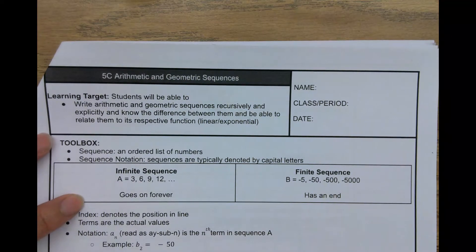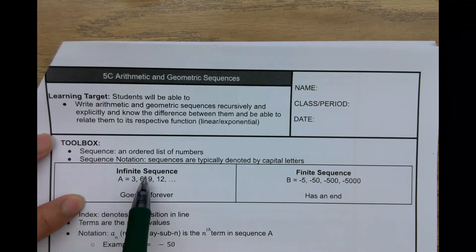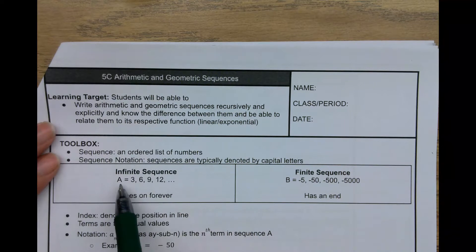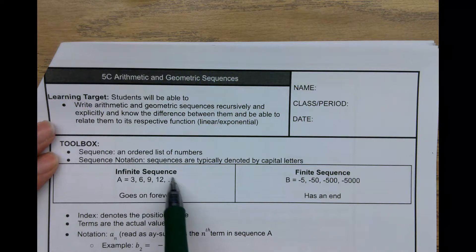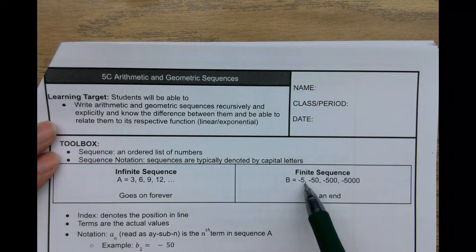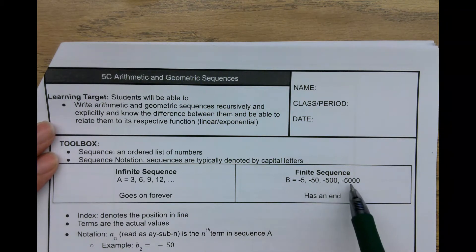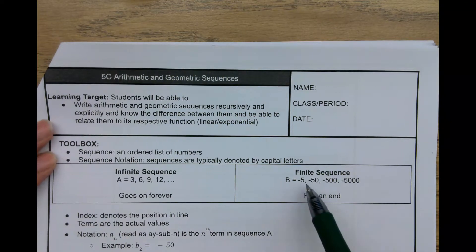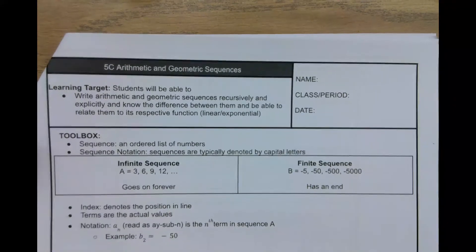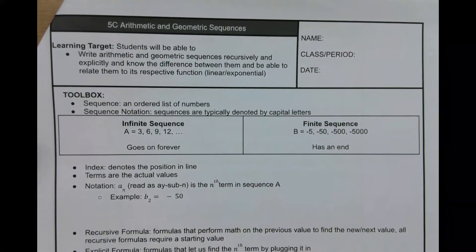We have two types of sequences. One is an infinite sequence, which means it goes on forever. Sequence A consists of 3, 6, 9, 12, and so on, shown by these three dots. Versus a finite sequence, which has an end. Sequence B consists of negative 5, negative 50, negative 500, negative 5,000 — it doesn't go on forever, it only has these four terms.